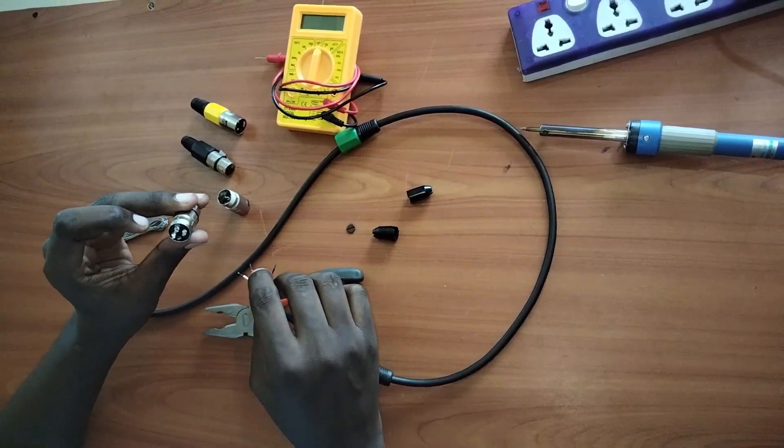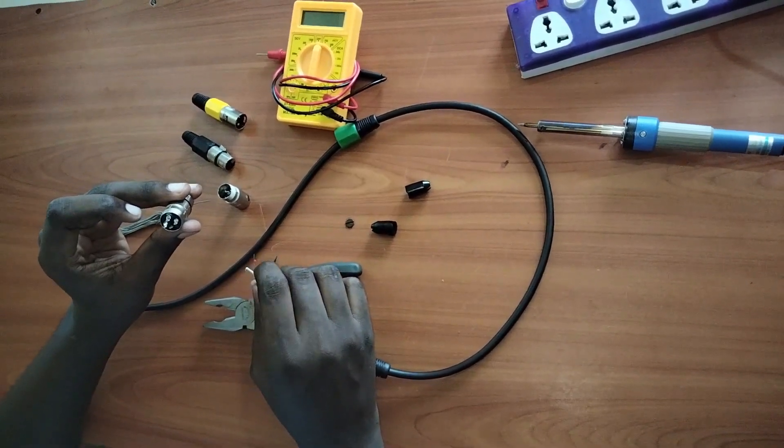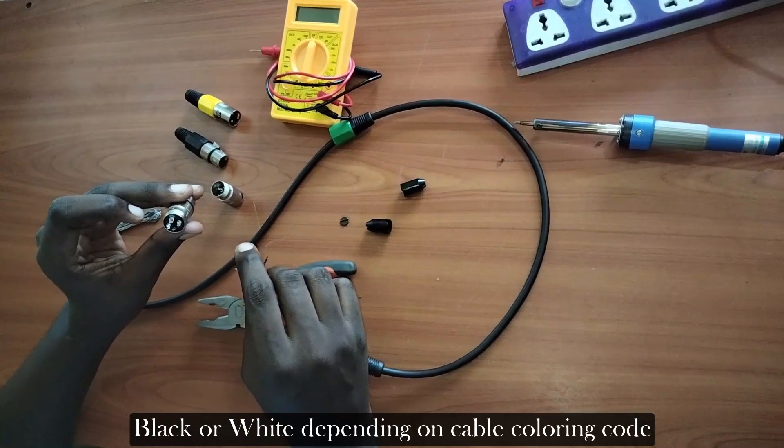On terminal 1, this is where you put the black or the ground. Terminal 2 is very important, 2 is where the red goes.